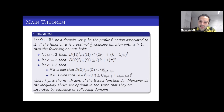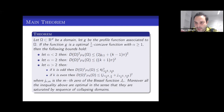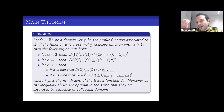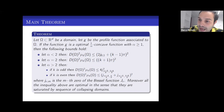Our theorem concerns domains for which the profile function is an optimal beta-concave function. The main theorem is the following. Suppose I have a domain omega in R^d and I denote by g the profile function associated to omega — a one-dimensional function in one variable. If this function is 1/alpha-concave with alpha strictly greater than one, then the following bounds hold. For alpha strictly less than two, the diameter squared times mu_k is always less than or equal to a number involving pi and the Bessel zero j_{0,1}, specifically (j_{0,1} + (k−1)pi)^2, where j_{nu,m} denotes the m-th zero of the Bessel function J_nu.